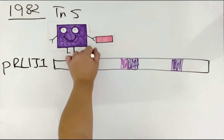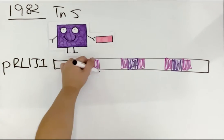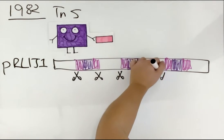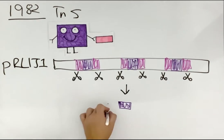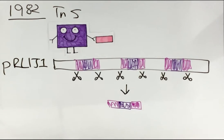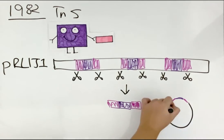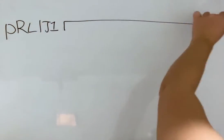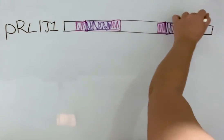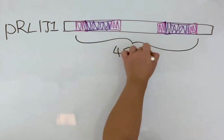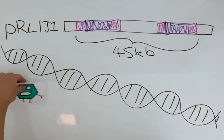Downey then identified the Tn5 insertion sites by restriction endonuclease mapping, in which restriction endonuclease, an enzyme, cuts the DNA in specific places — in this case at Tn5 insertions — to break the DNA up into small pieces. The regions of DNA surrounding the Tn5 insertions were put into E. coli plasmids and cloned. Restriction endonuclease mapping of these clones was used to identify two clusters of mutants. The mutant alleles span approximately 45 kilobases of DNA, and so defines the region of the plasmid that contains the fix and nod genes.